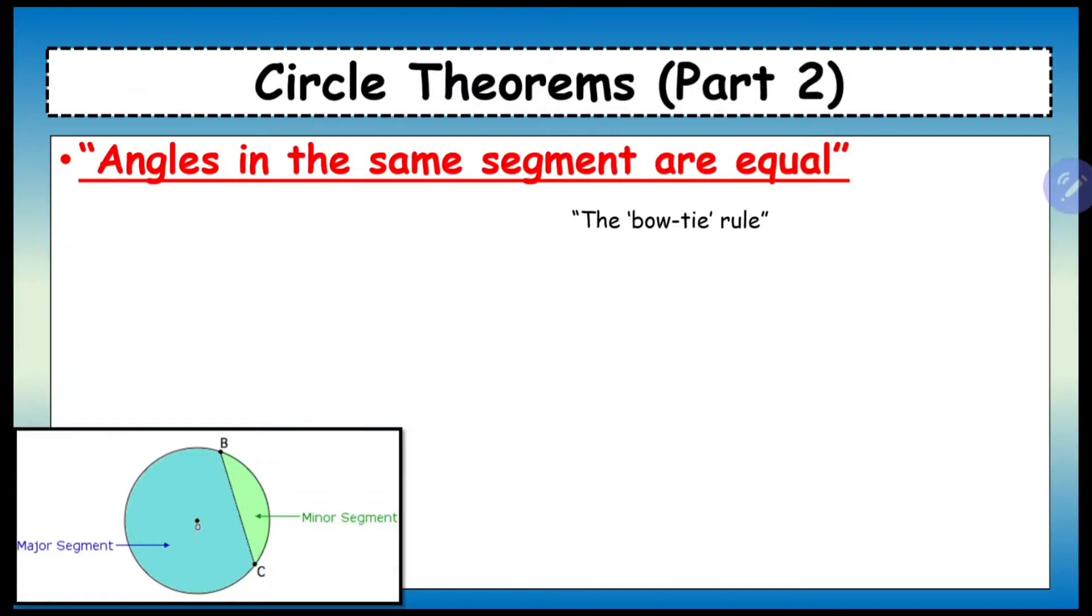In this video, we're going to focus on two more rules of circle theorems. The first rule is that angles in the same segment are equal. It's also known as the bow tie rule.